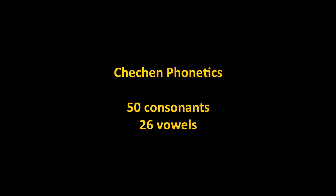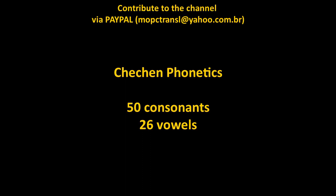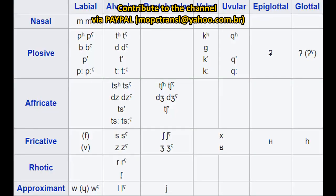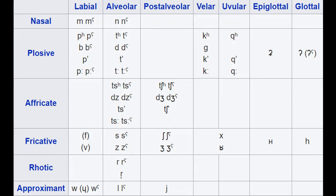When it comes to phonetics, Chechen is a pretty impressive language — and the grammar is also amazing. Chechen is one of the biggest languages in the world phonetically: it has around 50 consonants depending on how you count, and roughly 20 to 26 vowels if you include diphthongs, nasal vowels, and long versus short vowels. Chechen has a vowel system similar to that of German or other Germanic languages.